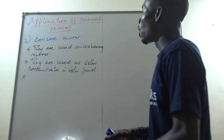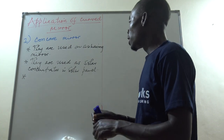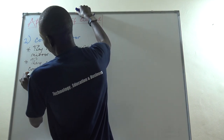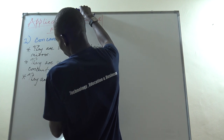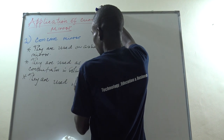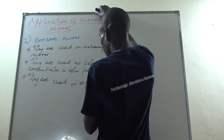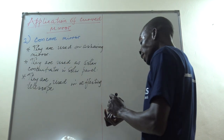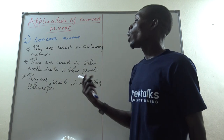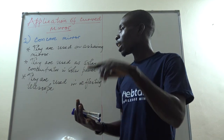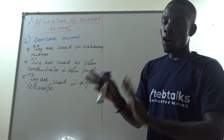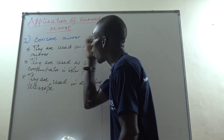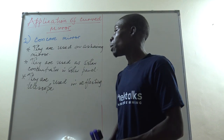We can also look at other uses of the concave mirror. They are used in all reflecting telescopes. We shall analyze this in detail when we come to optical instruments. The Cassegrain, the Newtonian, and other reflecting telescopes all use a concave mirror as their objective.